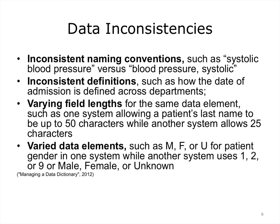The Health Information Management Association, AHIMA, identifies several types of inconsistencies and quality issues that can occur when data are captured and stored. These include inconsistent naming conventions, such as 'systolic blood pressure' versus 'blood pressure systolic'; inconsistent definitions, such as how the date of admission is defined across departments; varying field lengths for the same data element; and varied data elements, such as using male, female, or U for patient gender in one system, while another system uses 1, 2, or 9, or male, female, or unknown. AHIMA further states that inconsistencies in data definitions can lead to inaccurate data use and health data reporting, and can potentially affect the quality of care.